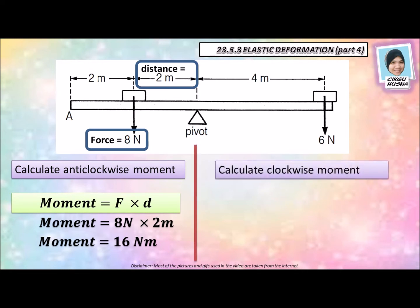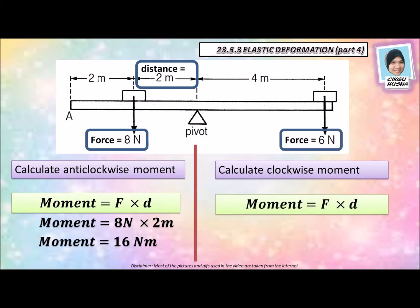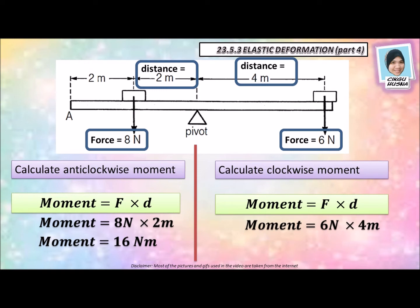How to calculate clockwise moment? For clockwise moment, the force given is 6 Newton and the distance from the force 6 Newton to the pivot is 4 meters. Using the same formula, force times distance, we get 6 Newton times 4 meter equals 24 Newton meter.